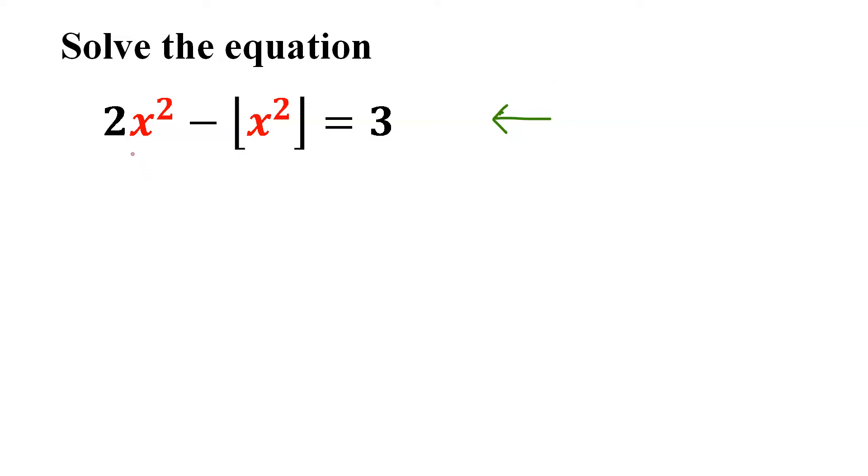The first key here is that we can write x squared using the floor value of x squared, which is x squared equals floor x squared plus alpha, where alpha is a value from 0 to less than 1.